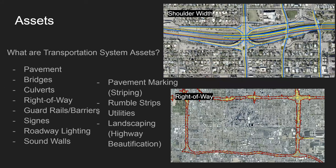Then we get into the concept of assets, which are a little different from roadway characteristics. These items typically have a significant monetary value and a particular cost to maintain. The number of miles of pavement can be calculated and you can get estimates of how much that's worth. Bridges have monetary values and cost a lot to maintain. Essentially, these are assets we really need to keep track of because of their monetary value and the budgeting required to keep them in good functional condition.